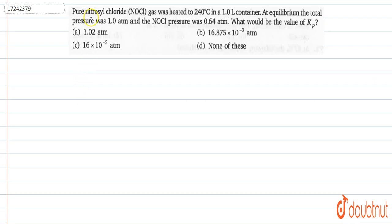The question is: Pure nitrosyl chloride NOCl gas was heated to 240 degrees centigrade in a 1-liter container at equilibrium. The total pressure was 1 atm and the NOCl pressure was 0.64 atm. What would be the value of Kp? Option A is 1.02 atm, B is 16.875 × 10⁻³ atm, C is 16 × 10⁻² atm, and D is none of these.